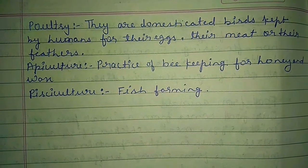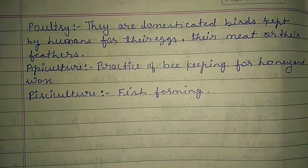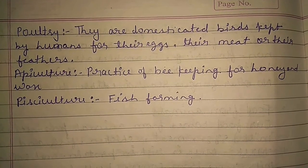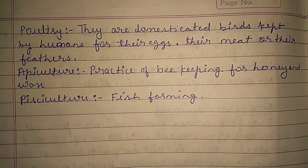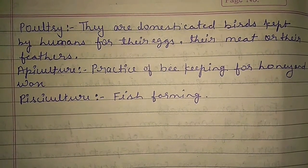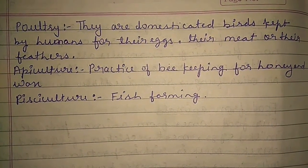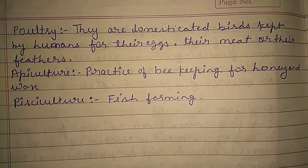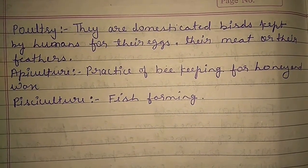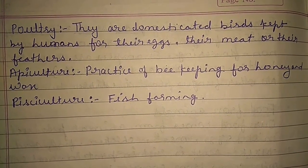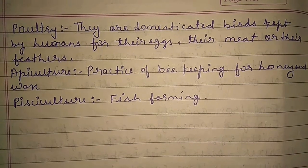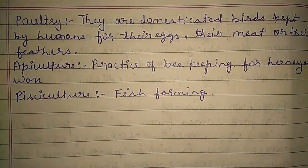Now students, let us understand three new terms. The first is poultry — poultry means domesticated birds kept by humans for their eggs, meat, and feathers. Next is apiculture, which means the practice of beekeeping for honey and wax. And pisciculture is related to fish farming.